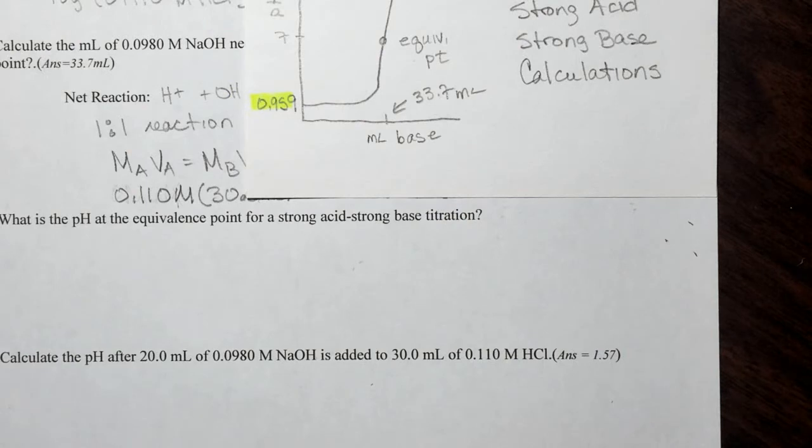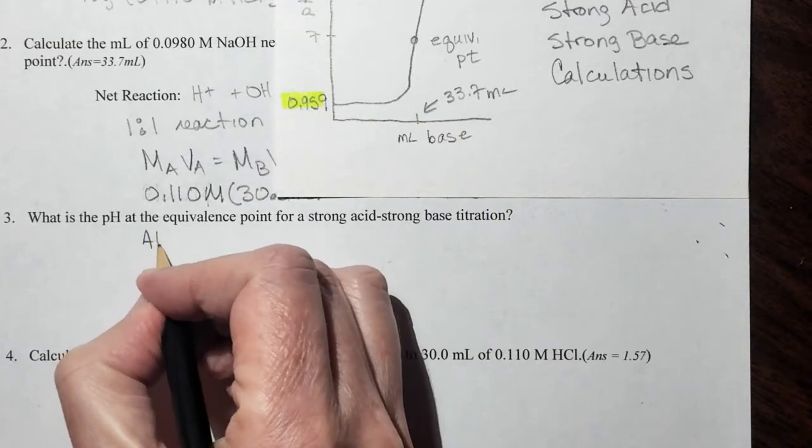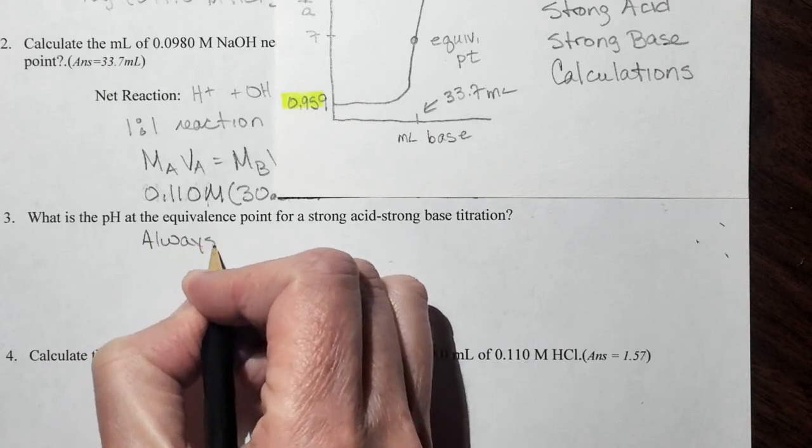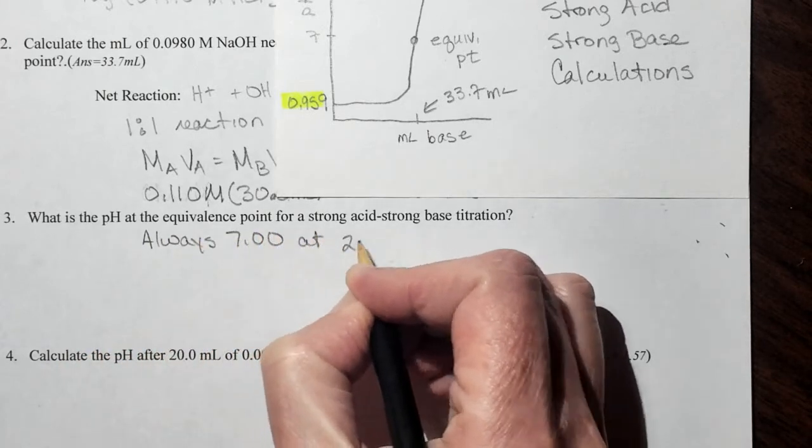Alright, next question. What is the pH at the equivalence point of a strong acid, strong base titration? It's always 7. So it's always 7.00 at 25 degrees Celsius.